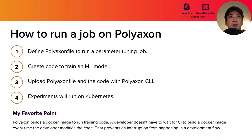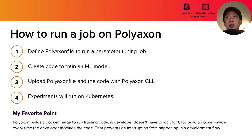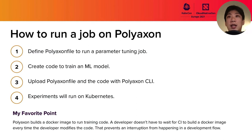Here are the steps to run a hyperparameter training job on PolyAxon. First, we define the PolyAxon file. Next, we create or modify the code to train the model and decide what ML library or model architecture to use. The third step is to upload the PolyAxon file and the code with the PolyAxon CLI. PolyAxon will then build a Docker image to run the training code and schedule the hyperparameter training job in parallel.